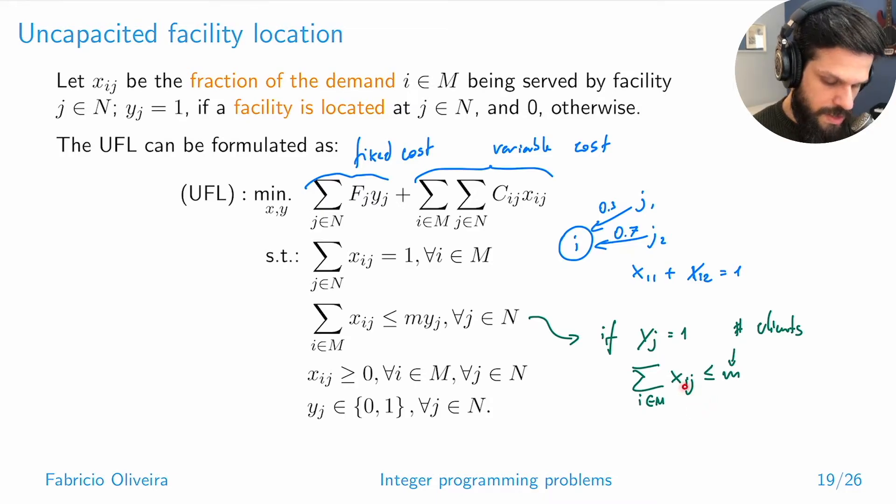We use this notion of fraction because otherwise, if these were actual demand values without capacity, you'd have to have sufficiently large numbers here to make this constraint work. Even though having big-M's is a valid strategy, it should be avoided whenever possible for numerical reasons and for reasons we'll discuss more in the next lecture.